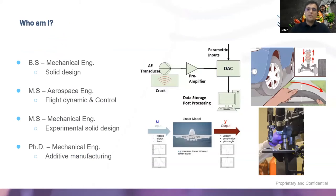I would like to give a little background about myself. I got my bachelor's degree in mechanical engineering focused on solid design, my first master's on aerospace engineering in flight dynamics and control, and my second master's in mechanical engineering focused on experimental solid design. Finally, I got my PhD in mechanical engineering, focusing on additive manufacturing and 3D bioprinting.